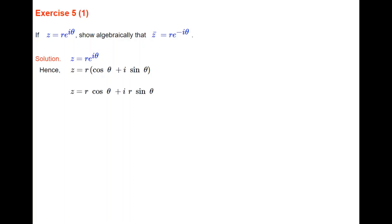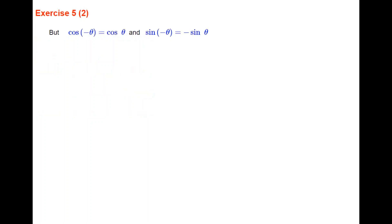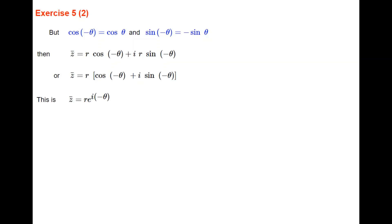Therefore Z = R·cos θ + i·R·sin θ, and the conjugate of Z will be R·cos θ − i·R·sin θ. Taking R out front of the brackets, the conjugate of Z is R·(cos(−θ) + i·sin(−θ)), which is R·e^(i(−θ)) = R·e^(−iθ). So the conjugate of Z in polar form is R·e^(−iθ).